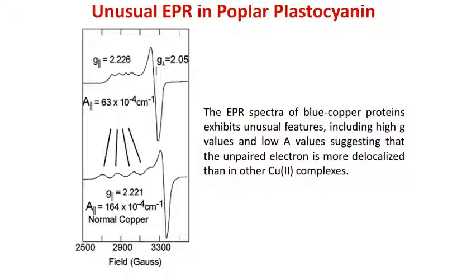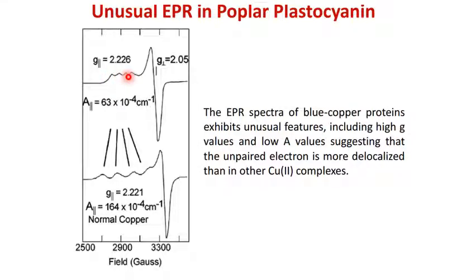The EPR spectra of blue copper protein exhibit unusual features: it has a high G value — 2.226 and 2.1 — and a low A value of 63, compared to the normal copper complex value of 164. This high G and low A value suggests that the unpaired electron on the copper 2 metal ion is delocalized much more in blue copper protein. Because of this greater delocalization in plastocyanin, it has a high G value and lower A value, and the hyperfine lines are very close together compared to other copper 2 complexes.